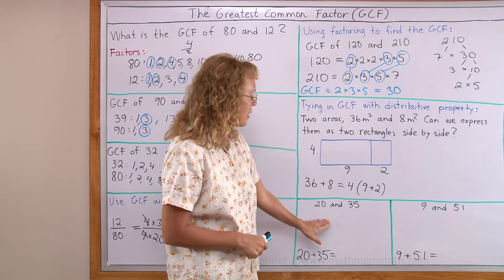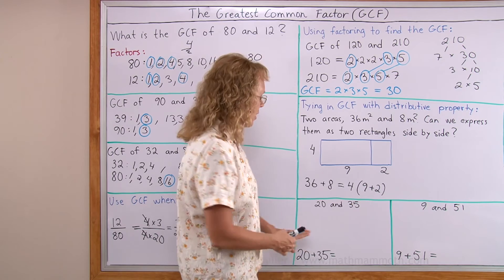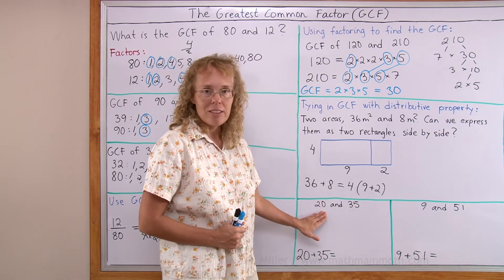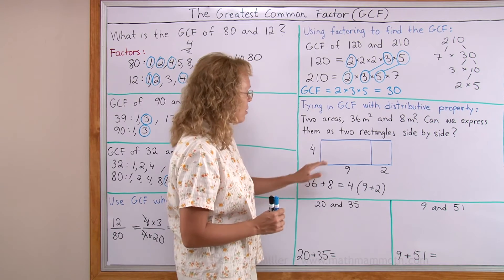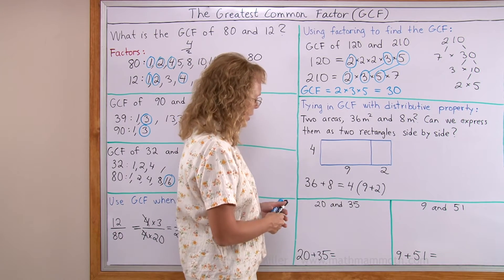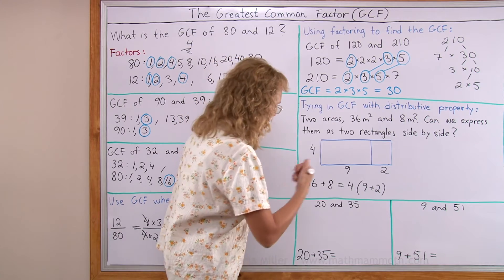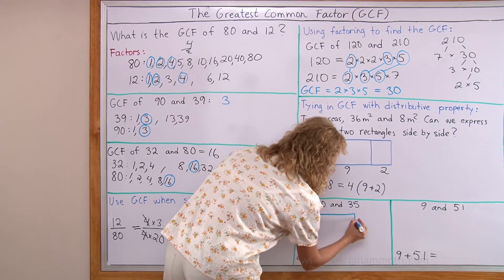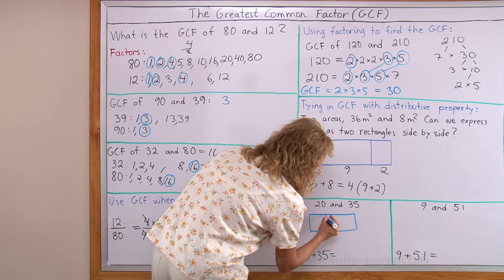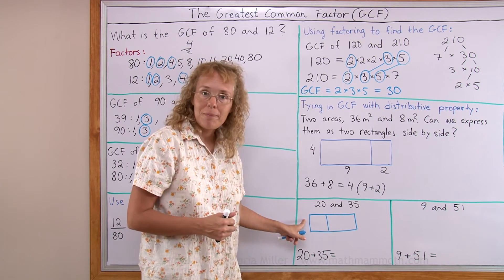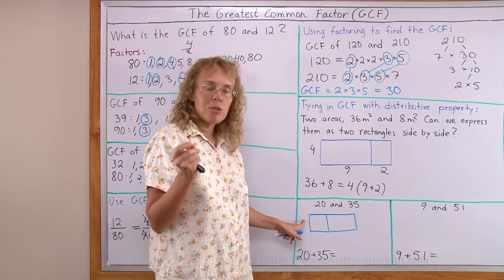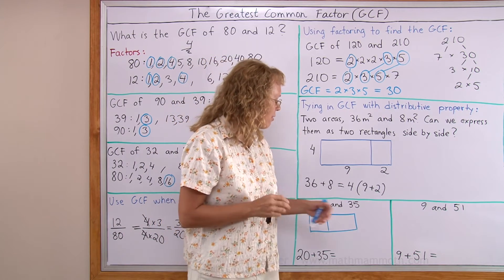Let's do the same with 20 and 35. It is as if this is 20 square meters. This is 35 square meters. They are areas. But, we want to place them as rectangles side by side. So, let me draw a rectangle then. This time the big area is on that side. What number can I put here? I want to use the greatest common factor of 20 and 35.